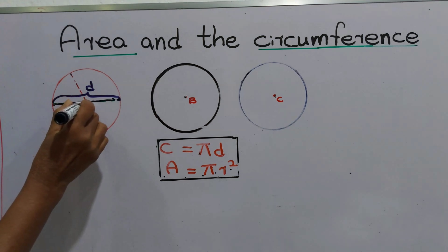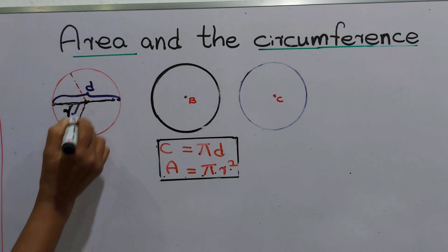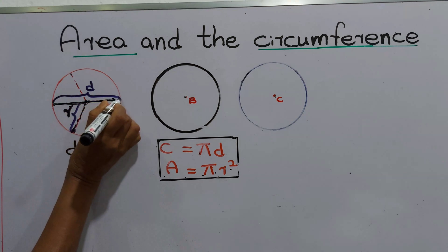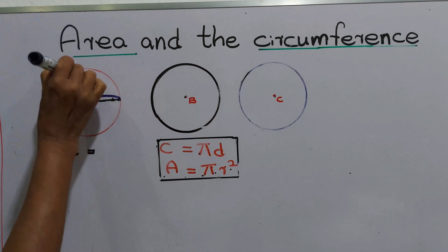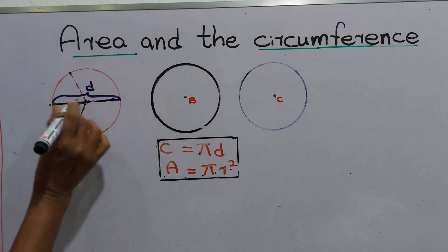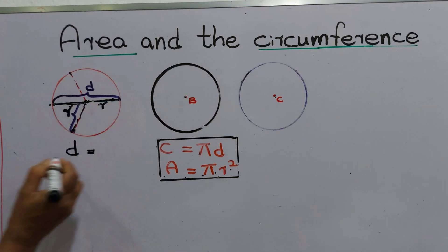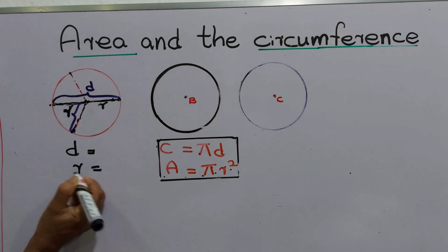The distance from the center of a circle to any point—from here to here, or from center to here—we introduce it as its radius. Radius as r.